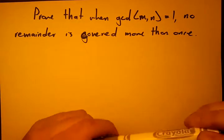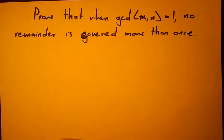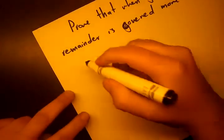In this final video, we have to prove that when the GCD of M and N equals 1, no remainder is covered more than once. Let's go ahead and prove this using proof by contradiction.